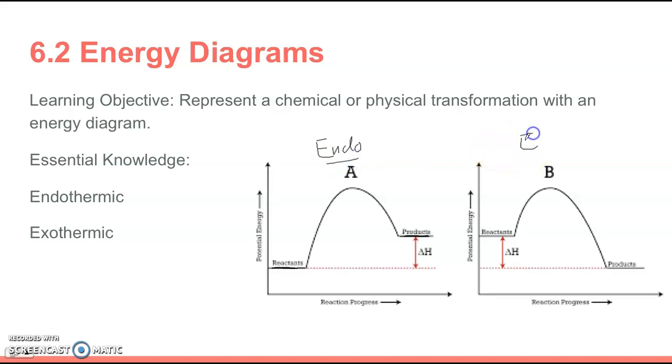This one, energy diagram B, that one's exothermic, where the products have a lower potential energy than the reactants. So that excess energy, that difference in energy, is then given off to the surroundings. That's an exothermic process.